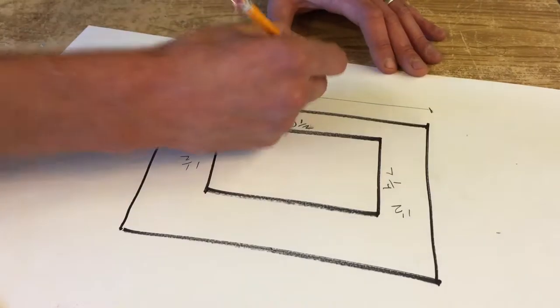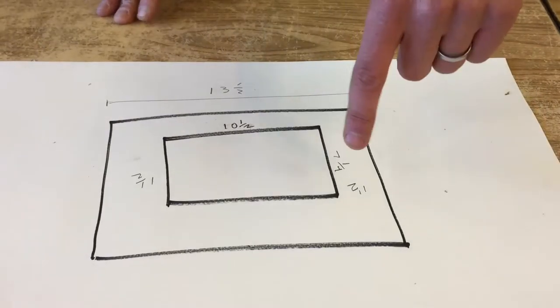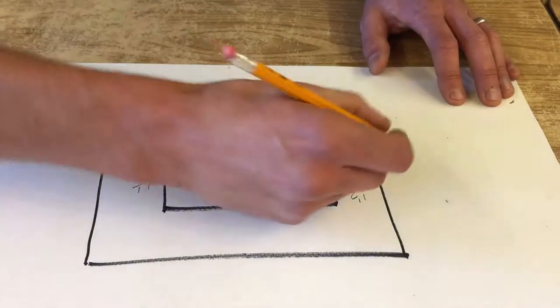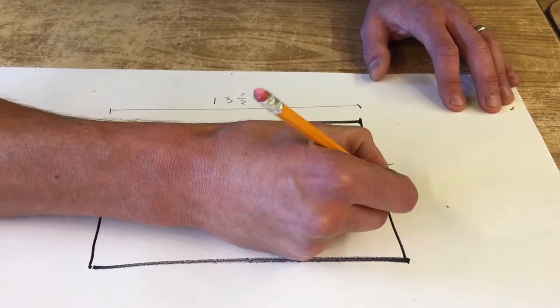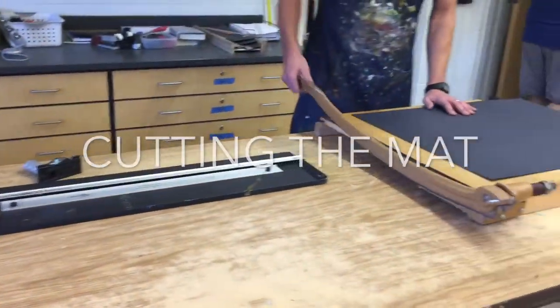I can't write upside down very well, but I will try. Okay, thirteen and a half, and then we'll add three to seven and a quarter. That will give us ten and a quarter. So that's how I know the whole size of the entire mat has to be that size.